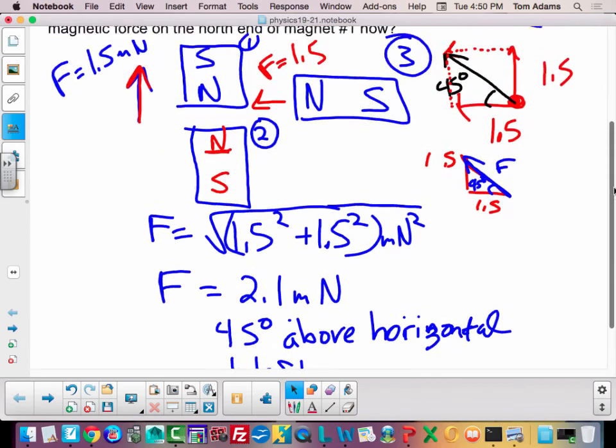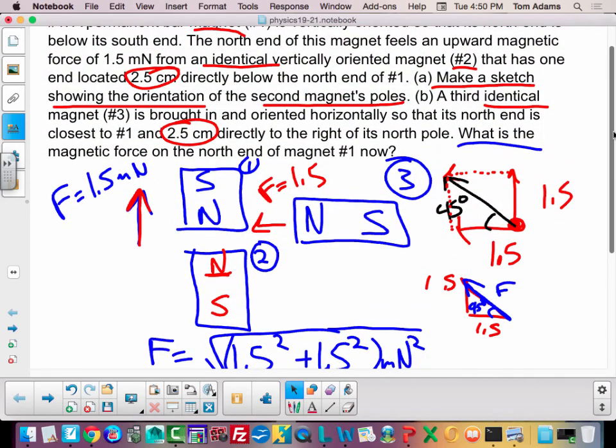So what the question is asking us is there's a force being applied to this magnet, and it's going to be a magnitude of 2.1, and it's going to be at an angle of 45 degrees upward or above the horizontal and to the left.